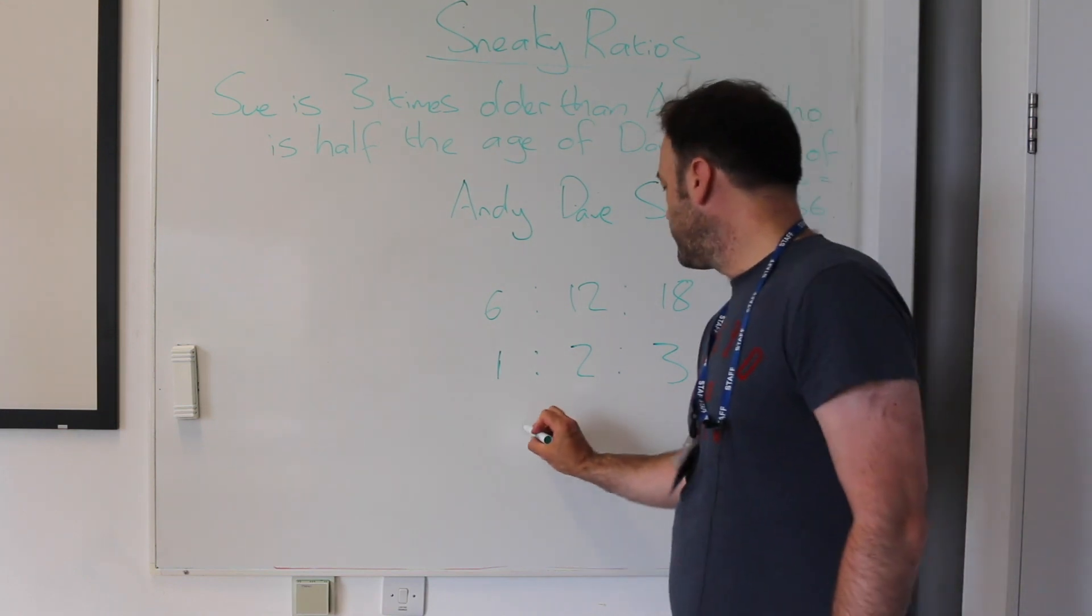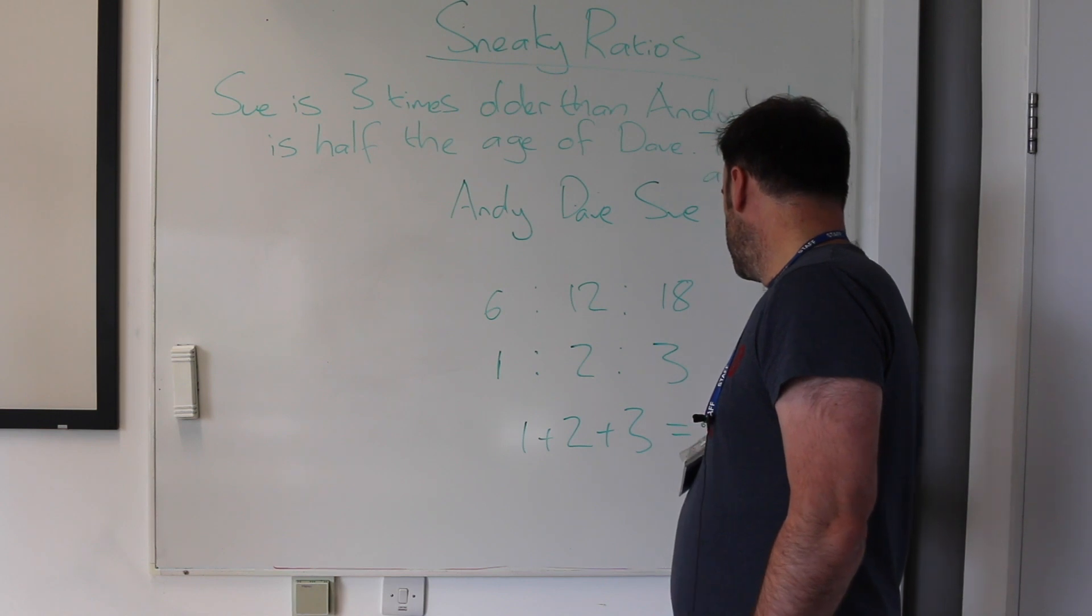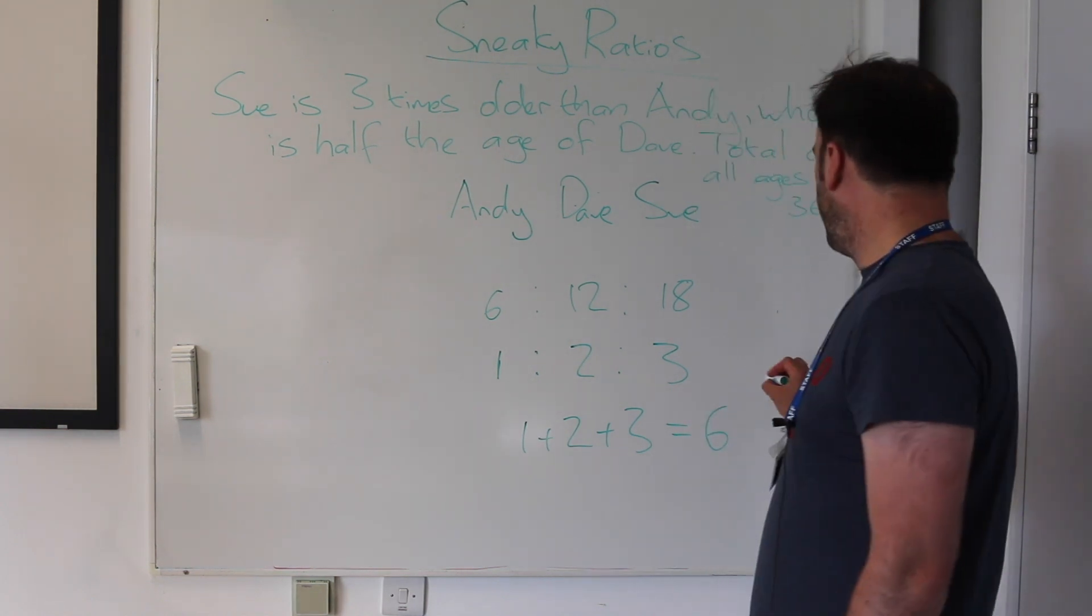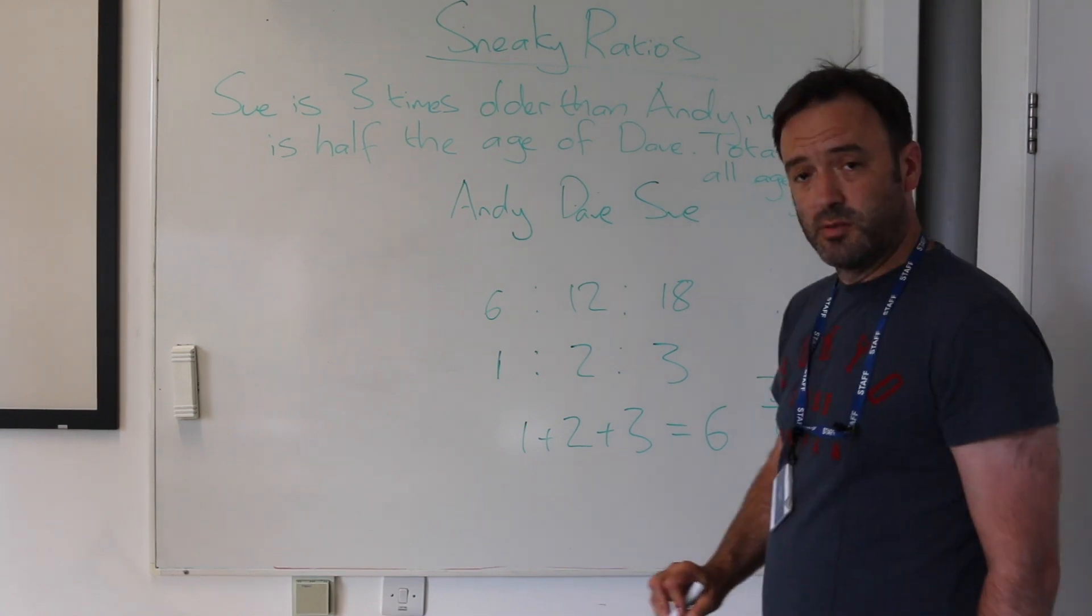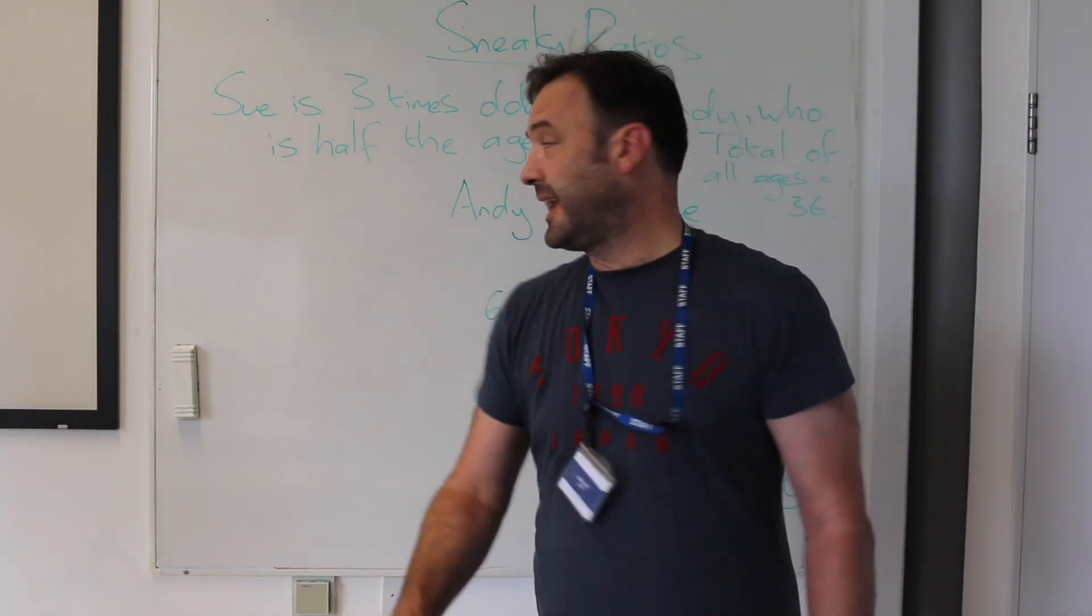What we do in ratio is we add the ratio numbers up, that comes to 6, we divide the total number by the total number of parts and it just so happens that's 6 again.